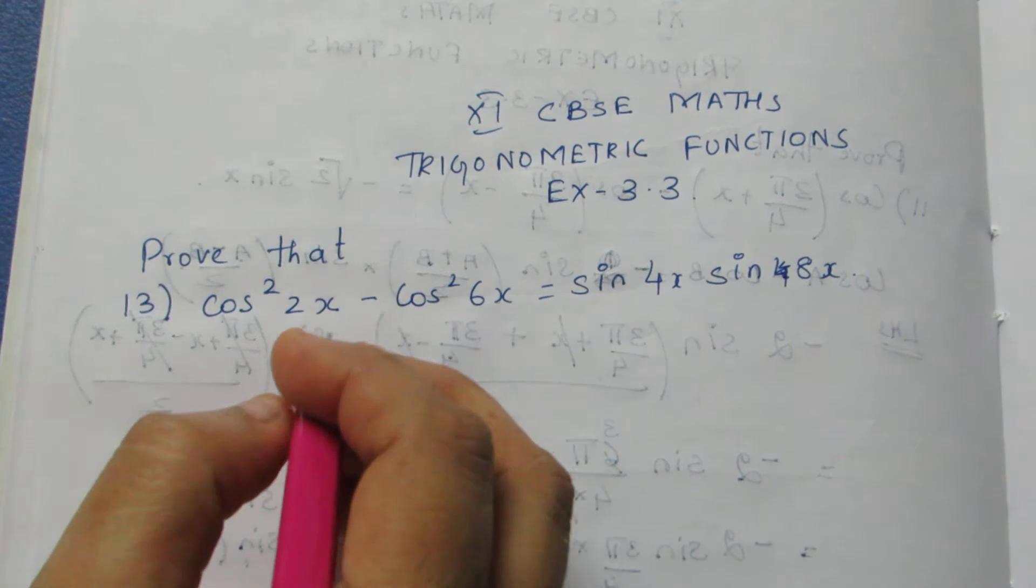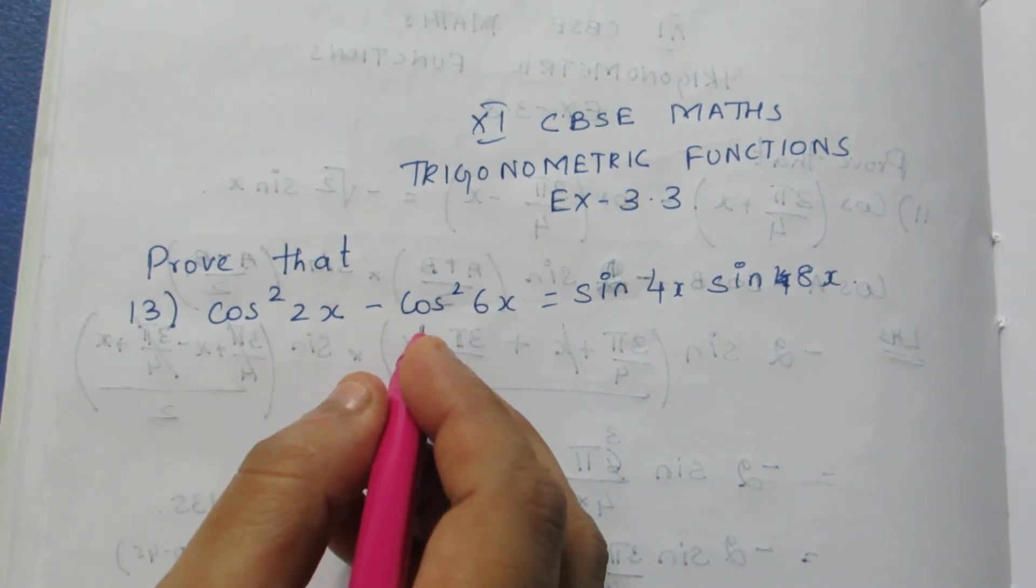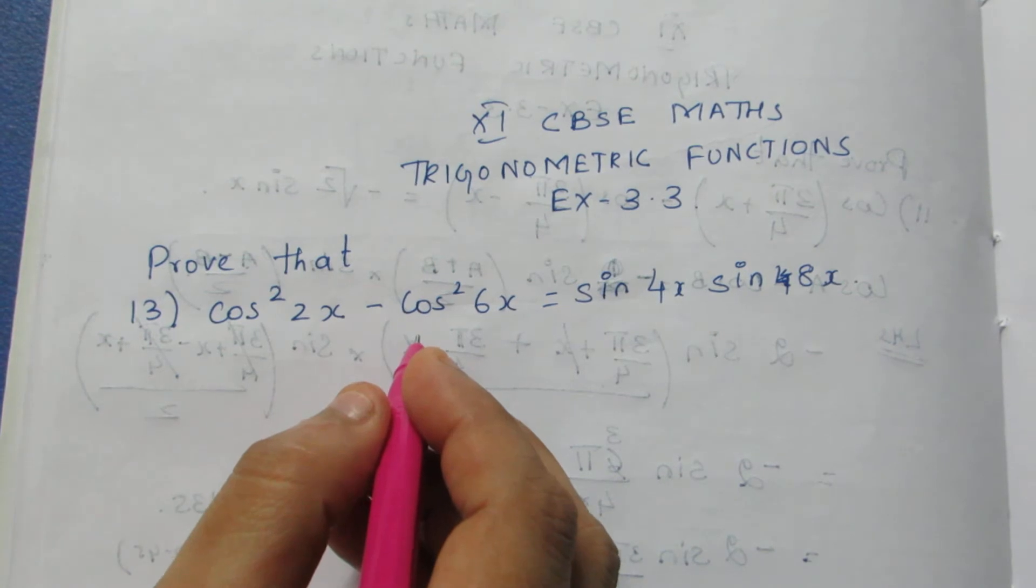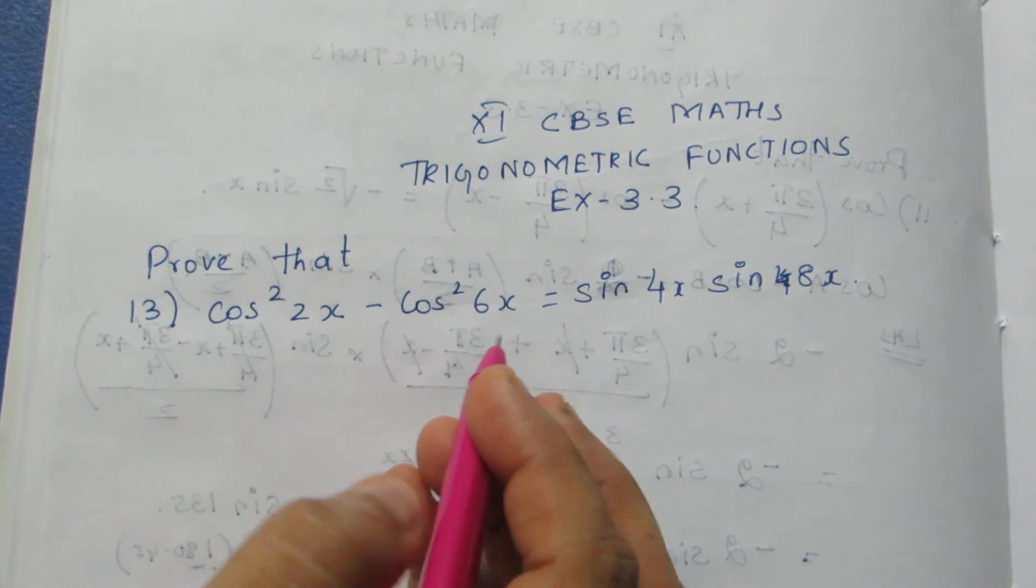We don't have any identity for cos² - cos². So we need to change this to sin² because we have an identity for sin²a - sin²b. I'm going to change this to sin² so that I can use the identity.